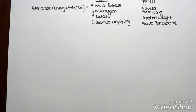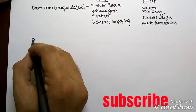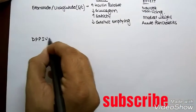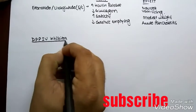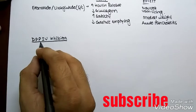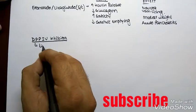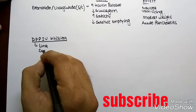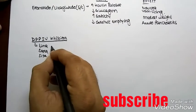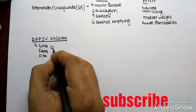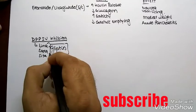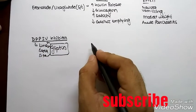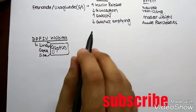Now we have done exenotide and liragrutide, it's time for DPP4 inhibitors. We know that dipeptide peptidase inhibitors are lena, sexa, cita, and the common word is glyptin. So where there is glyptin, we know we are talking about DPP4.